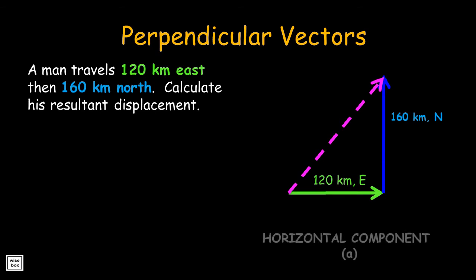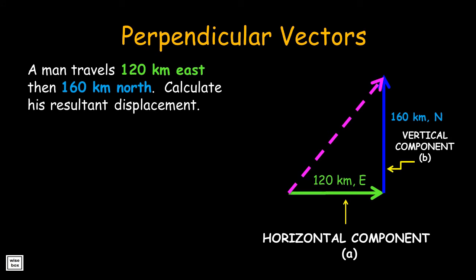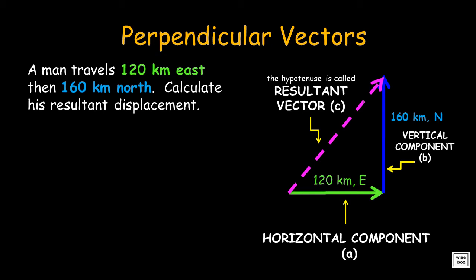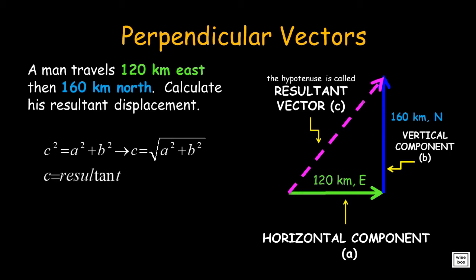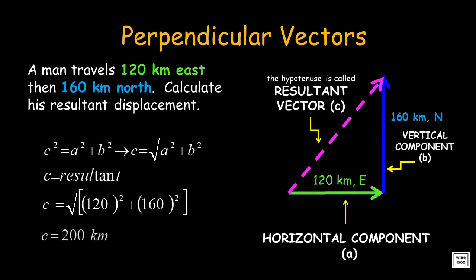This is the horizontal component, designated as A. This is the vertical component, designated as B. And this is the resultant vector, designated as C. This is the formula for the Pythagorean theorem. The resultant vector C is the hypotenuse. Using the given magnitudes of vectors A and B, the answer is 200 km.